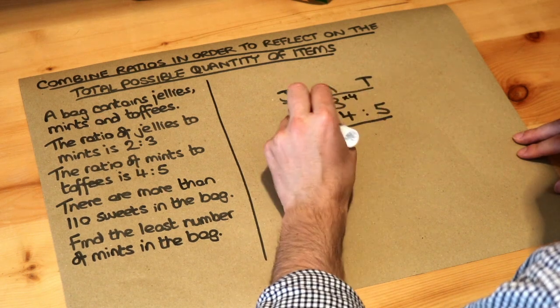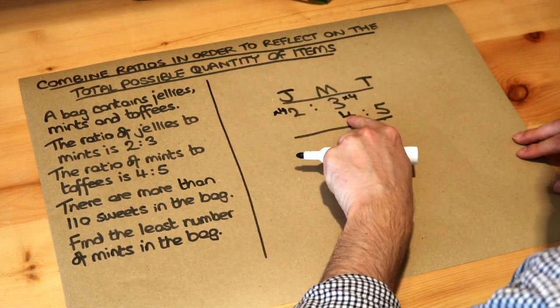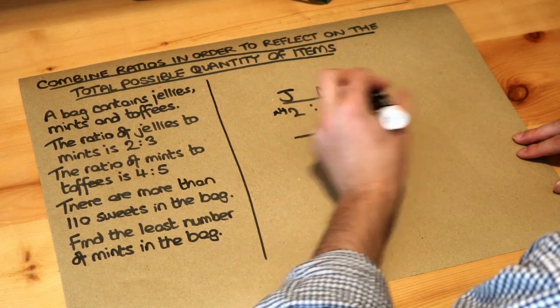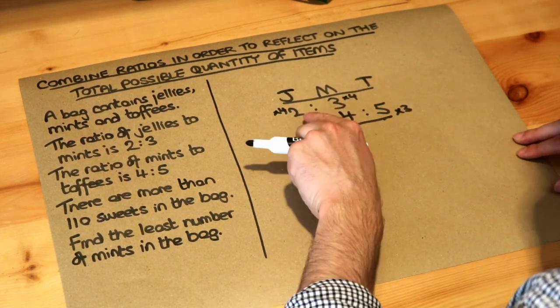If we're multiplying that by 4 we have to times that part by 4 and to get the 4 to 12 we times that by 3 and therefore the 5 also by 3. And let's do these calculations.